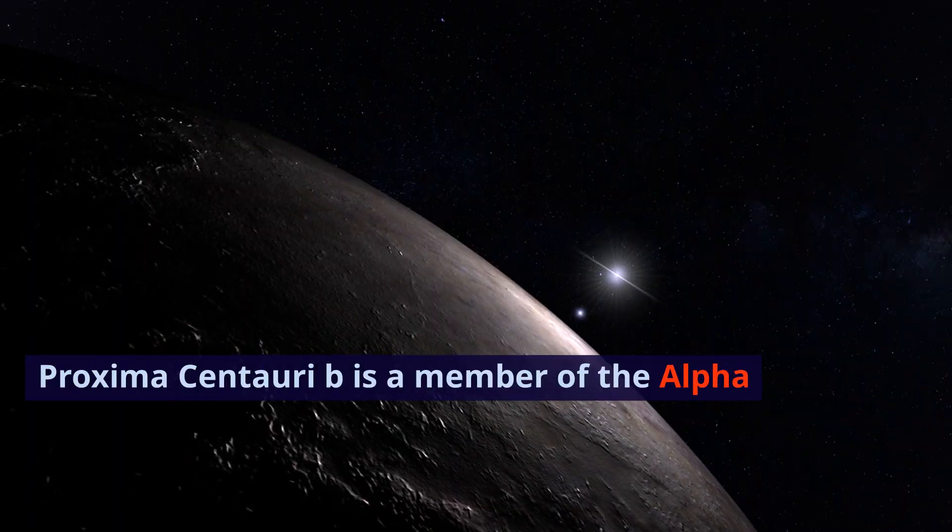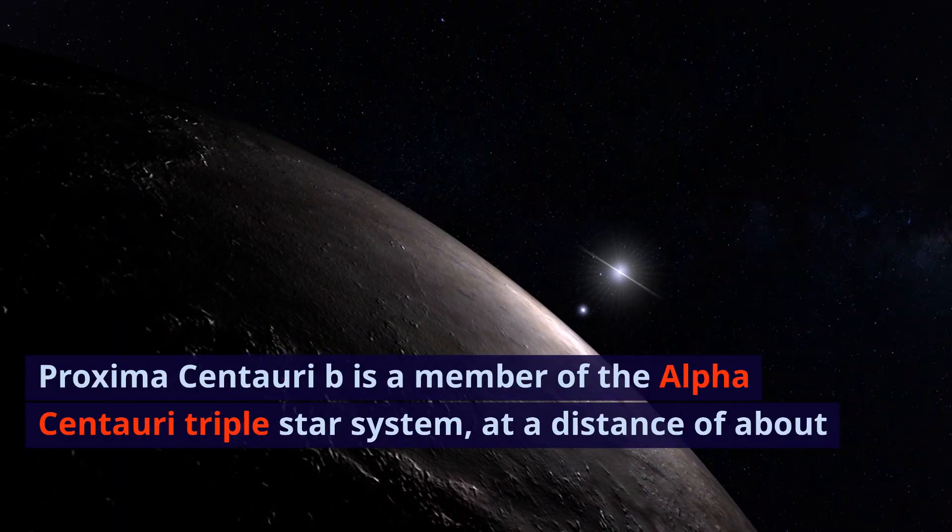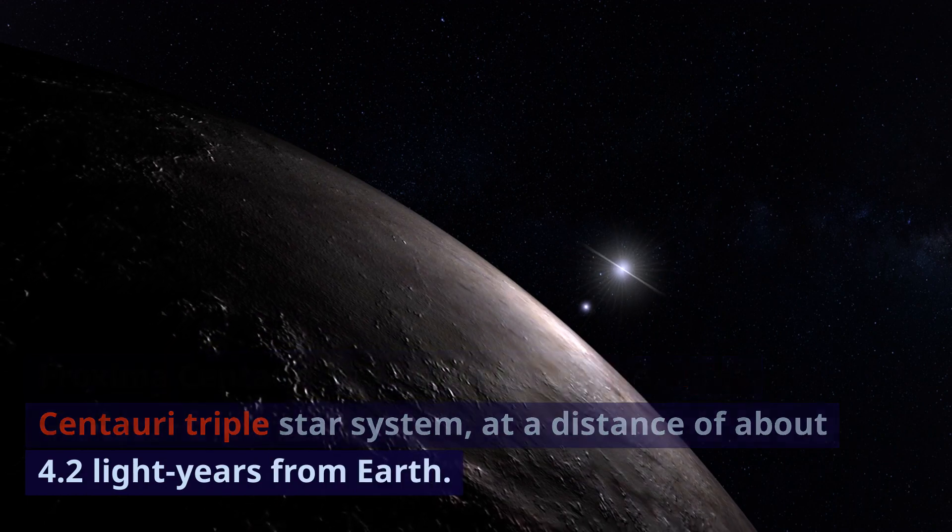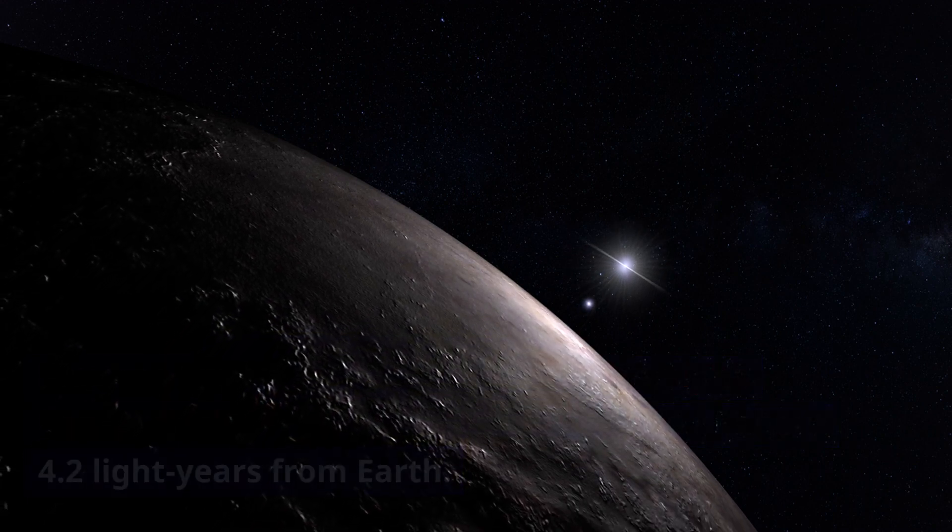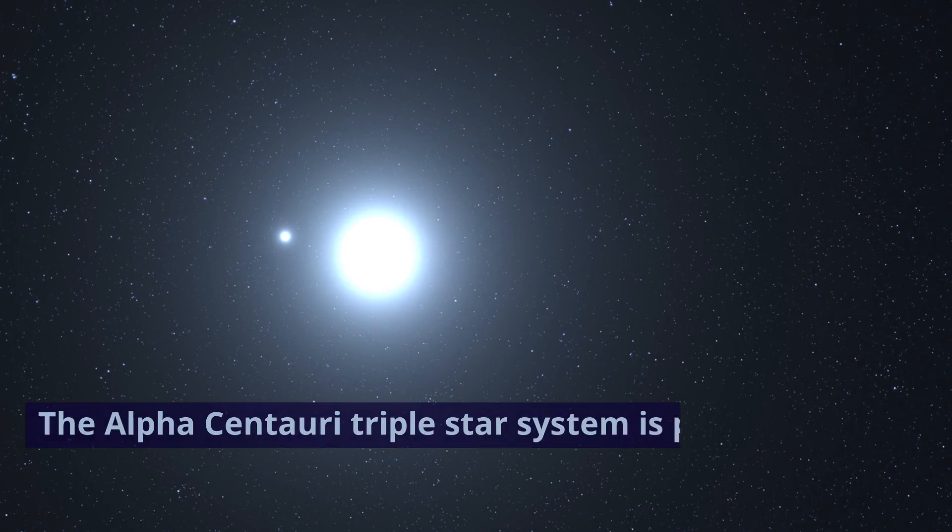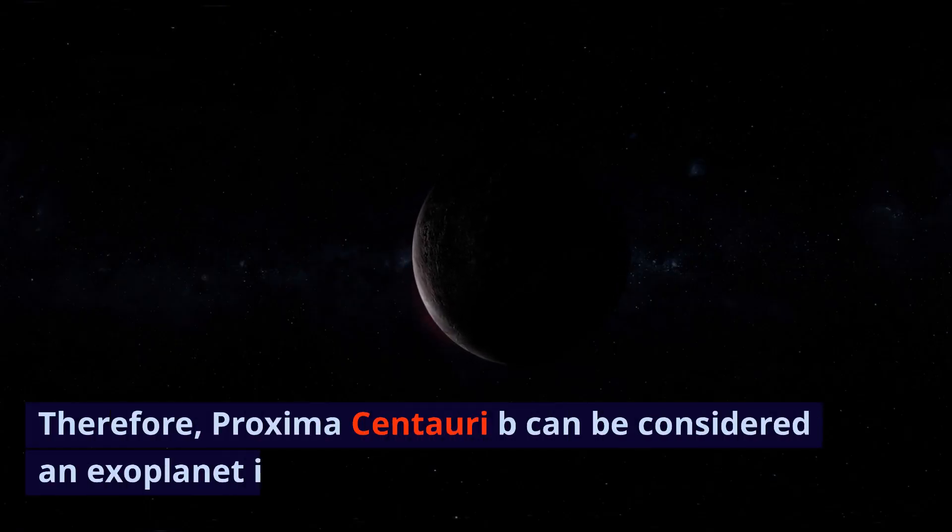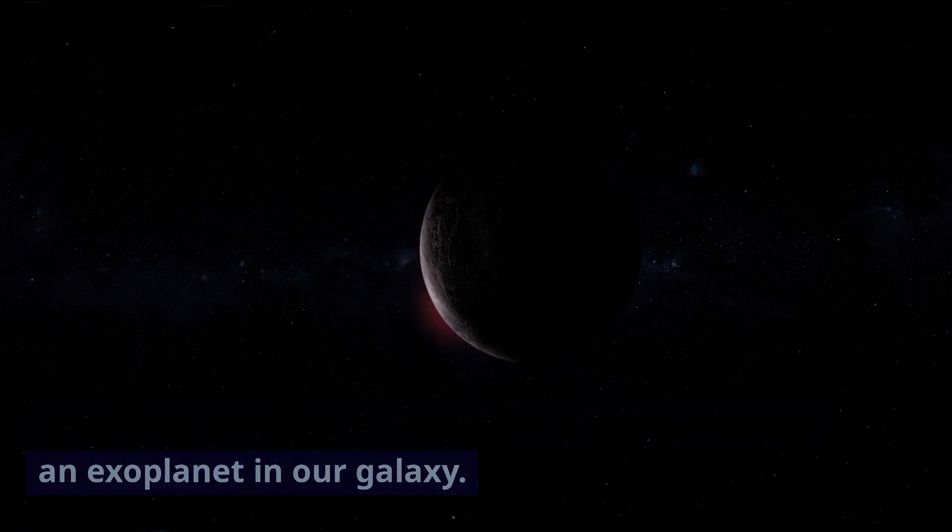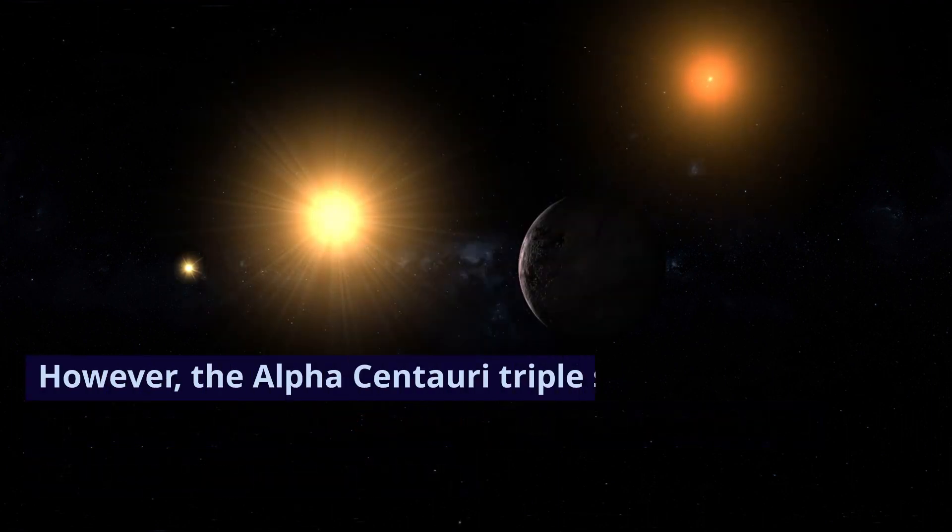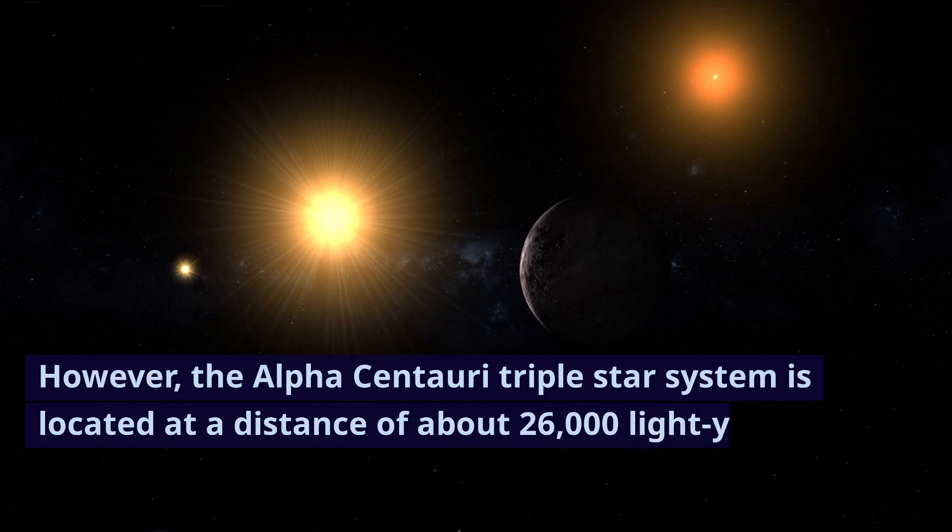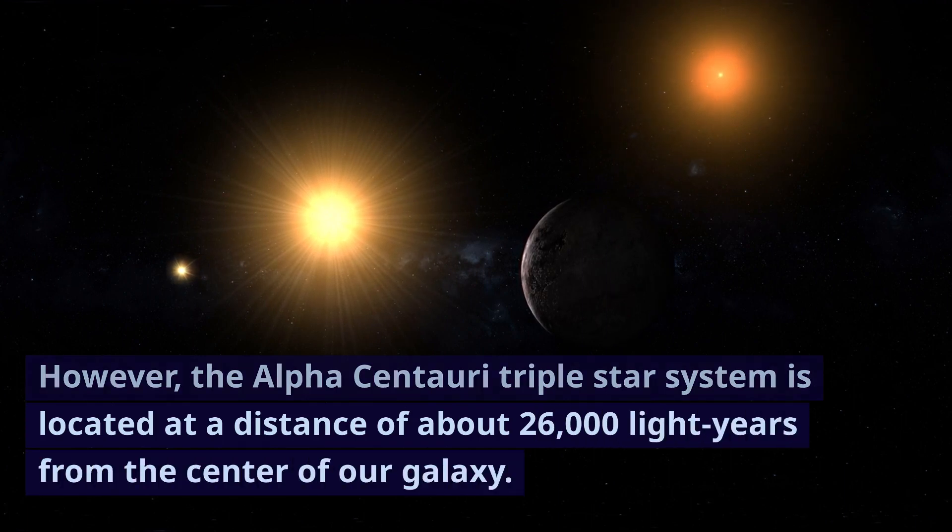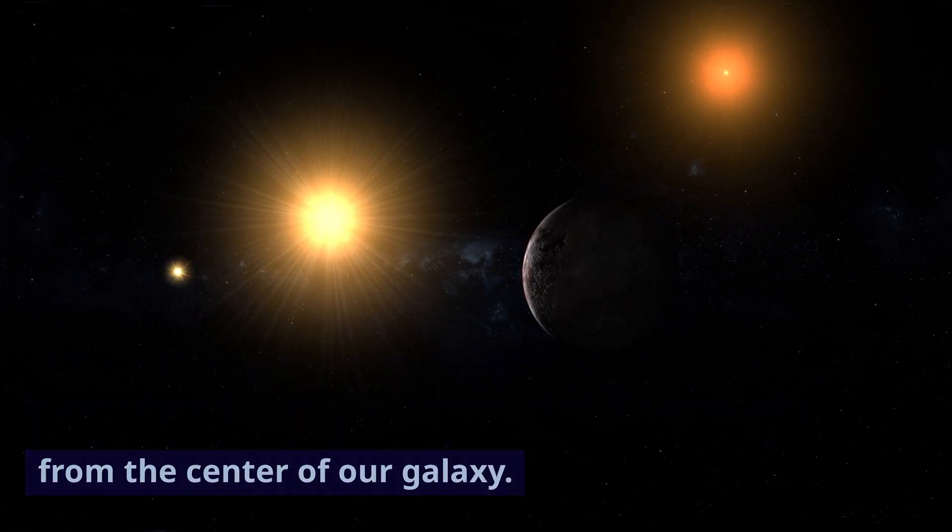Proxima Centauri b is a member of the Alpha Centauri triple star system, at a distance of about 4.2 light-years from Earth. The Alpha Centauri triple star system is part of our galaxy. Therefore, Proxima Centauri b can be considered an exoplanet in our galaxy. However, the Alpha Centauri triple star system is located at a distance of about 26,000 light-years from the center of our galaxy.